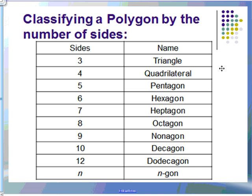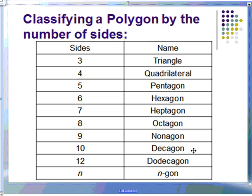There are also ways of classifying them by the different number of sides. Many of these you know: triangle, quadrilateral, pentagon, hexagon, heptagon, octagon, nonagon, decagon, dodecagon, and an n-gon is just depending on how many. After 12, it would just be a 13-sided polygon, a 14-sided polygon, and so on and so forth.